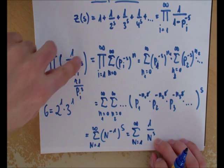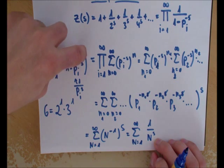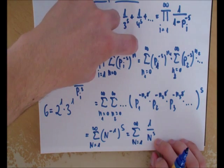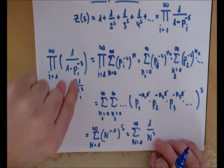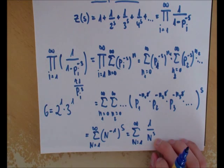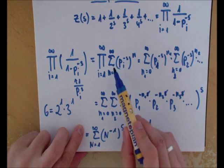We have just proved that the zeta function can be written as a product. How we did this was: we took this product here, and we used the geometric series. Very important here is that the s—from the real part—has to be greater than 1, or the sum will not converge.